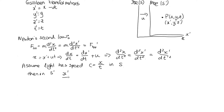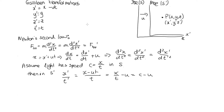In frame S dash, the speed is x dash over t dash. Now x dash equals x minus ut, over t dash which is the same as t. So this equals x/t minus u. And since x/t equals c, this gives c minus u. So if light travels with speed c in Joe's frame, it has speed c minus u in Mo's frame. This was an issue because it means you can conduct experiments with light and work out which reference frame you're in. So the laws of physics are not the same in all reference frames if the Galilean transformations are true.